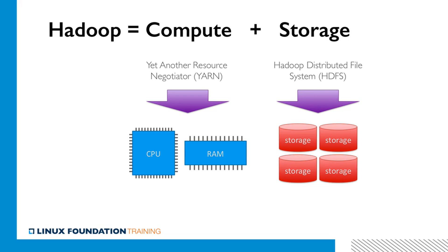After all, you need to store all the data somewhere, and then you need to process it by running various analytical algorithms in memory utilizing CPU power. So that's why Hadoop is basically about two components: first, there is YARN that manages all of the CPU and memory, and then there is HDFS that manages all of the direct-attached storage.